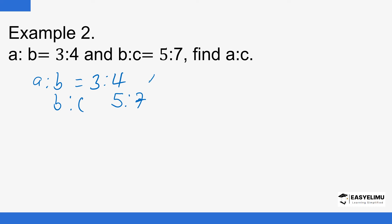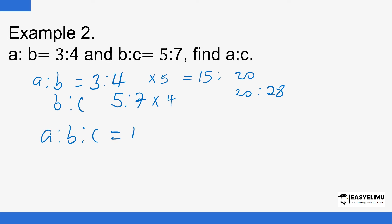We multiply the first ratio by 5 and the second ratio by 4. So a:b becomes 15:20 and b:c becomes 20:28. Now the value of b is the same (20) in both ratios. Therefore, a:b:c = 15:20:28.